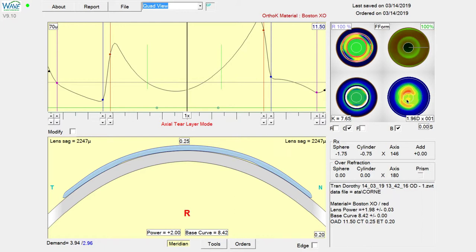It does make it a little bit more challenging because we have to get flattening here in the center and steepening out here away from that. The cornea is already kind of shaped like that, so to further exaggerate that shape is sometimes a little bit more challenging.